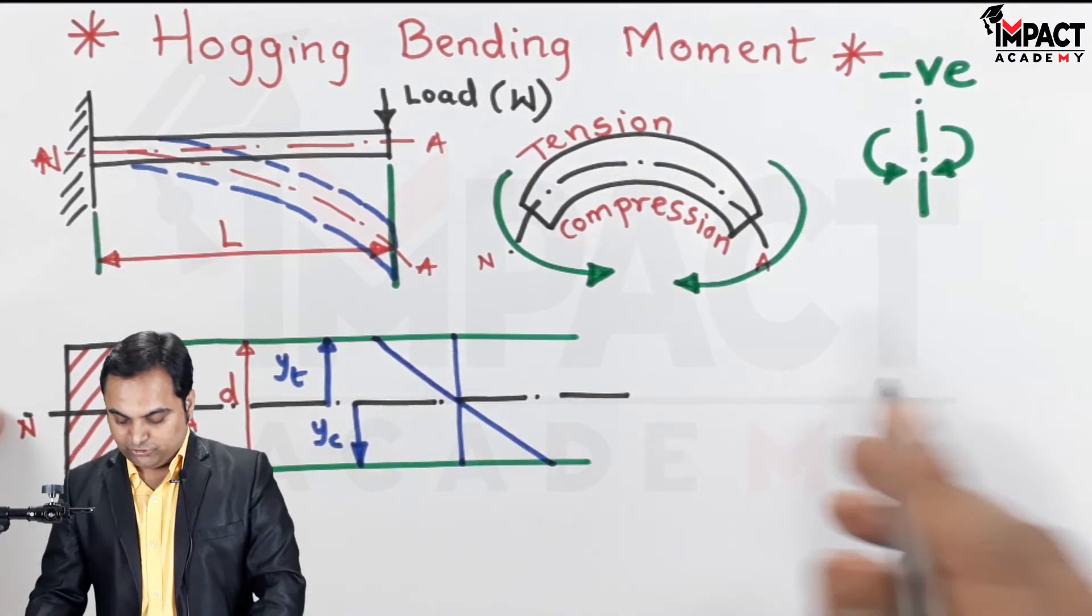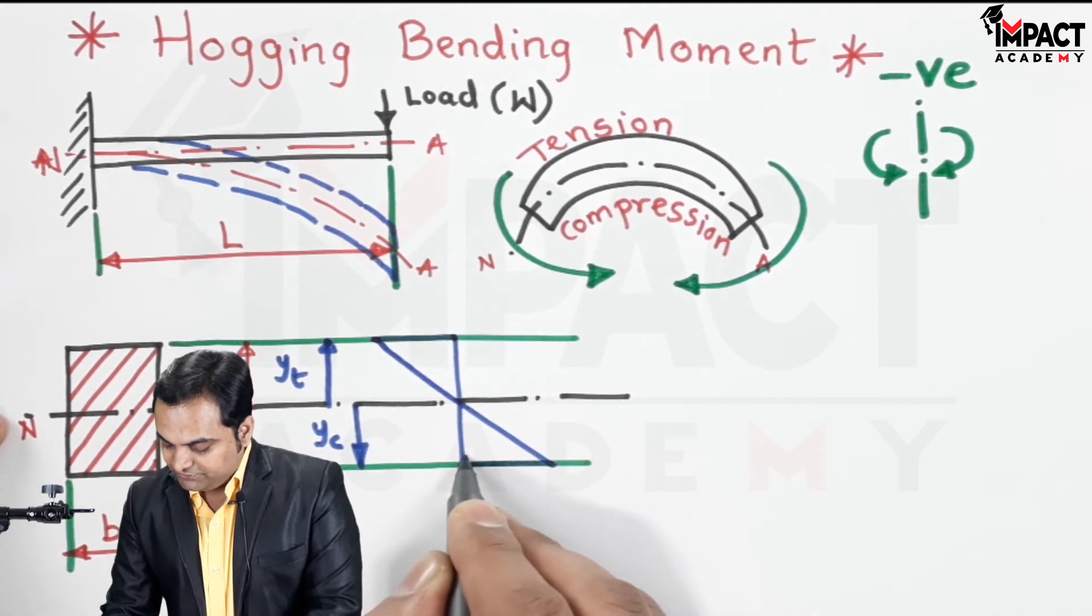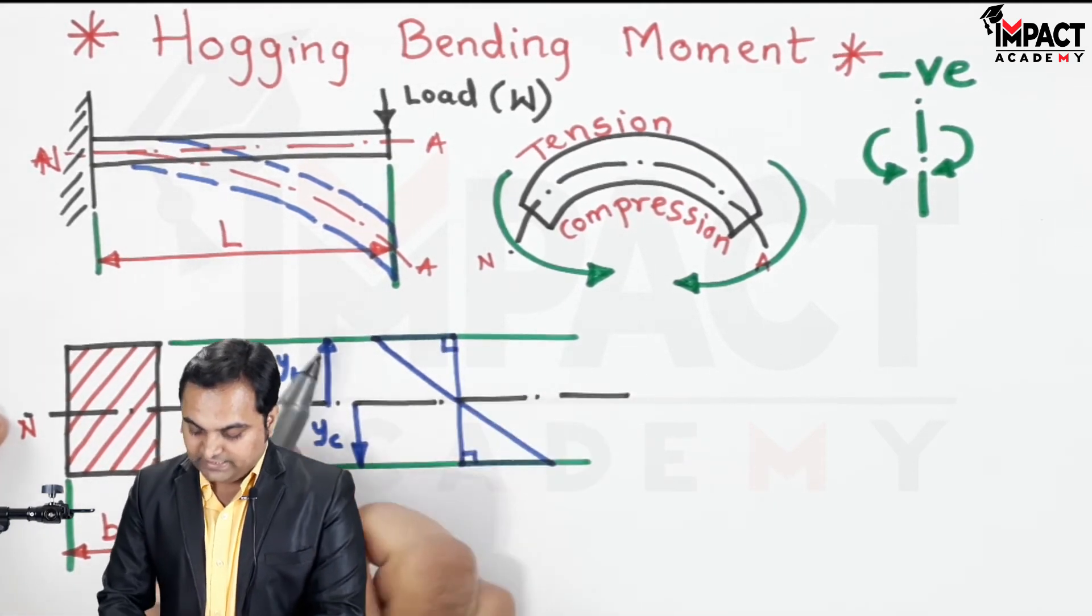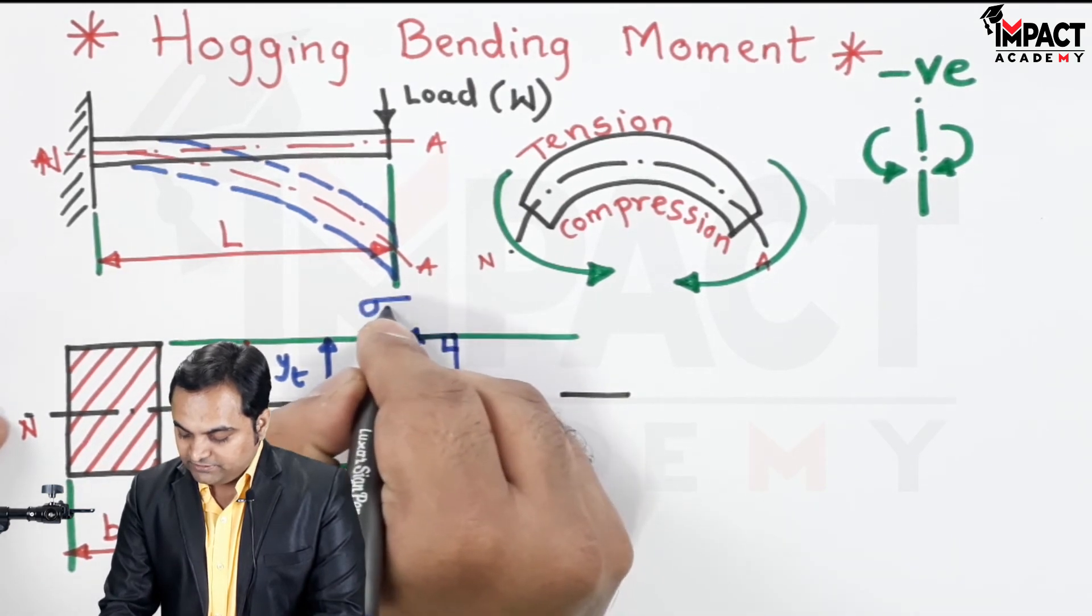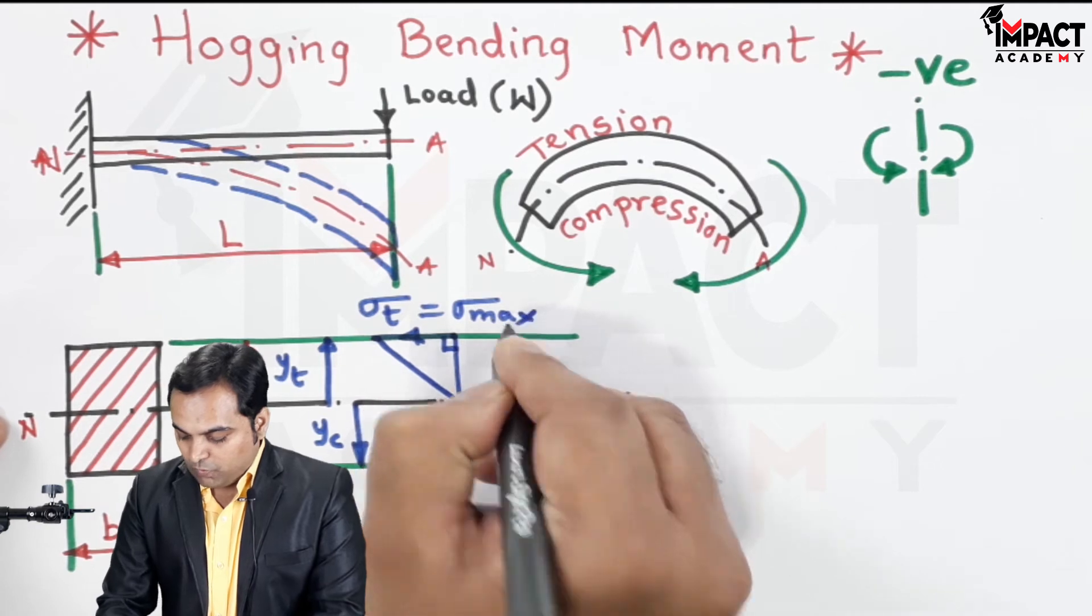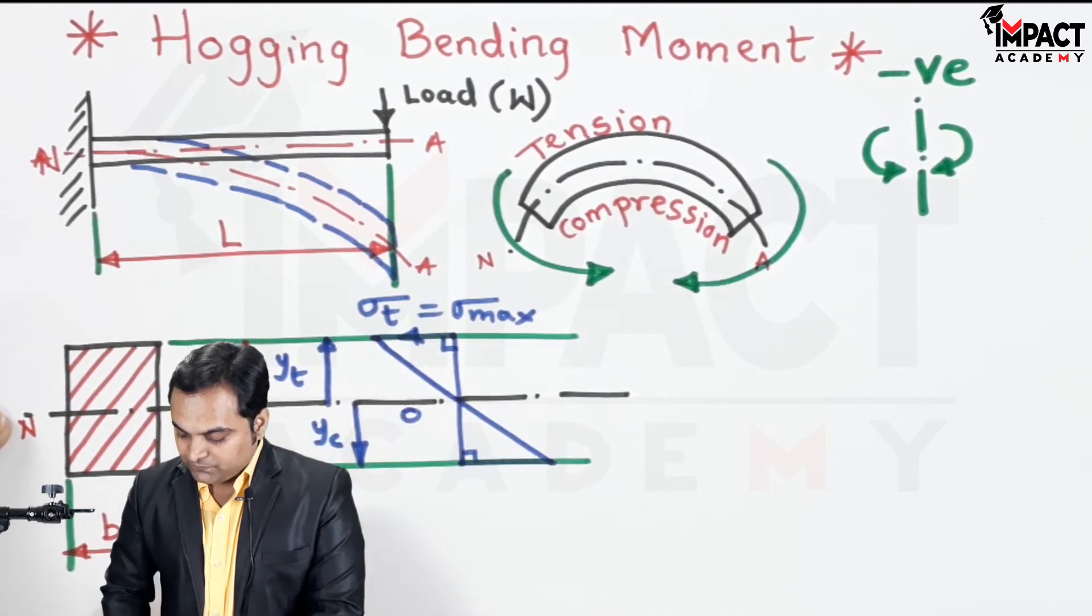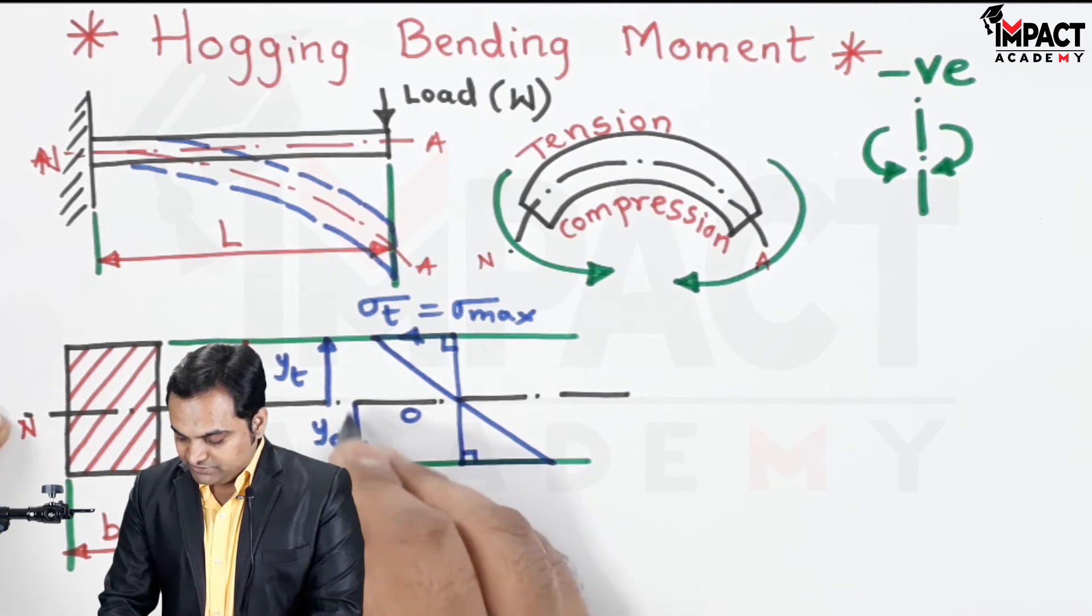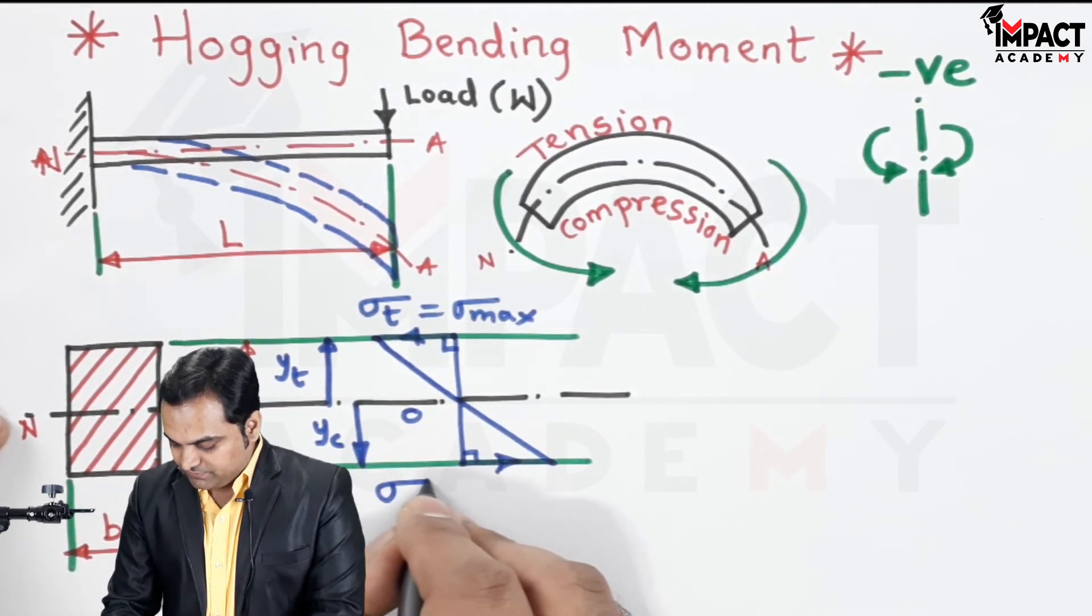And compressive stress at the bottom. So the nature or the signs should be opposite, like tensile stress is going towards left, denoted as sigma t. At the top it is maximum because y value is maximum. At the center the stress is zero.